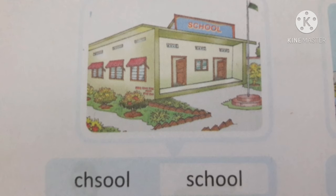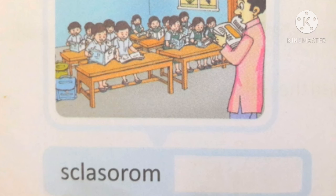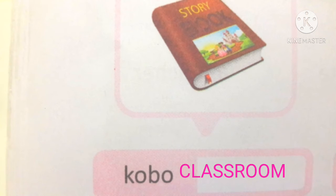S, C, H, O, O, L — school. Find the wrong one. Look at the object: classroom. C, L, A, S, S — class. R, O, O, M — room. Classroom.